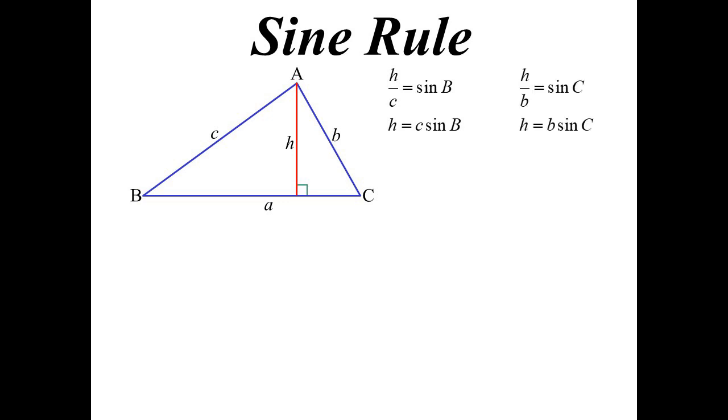I could do the same with the other triangle and I get an expression for h which is b sine C. Well, it's the same h, so therefore c sine B must equal b sine C. Playing around with that we get what we recognize to be the sine rule: c on sine C is b on sine B.